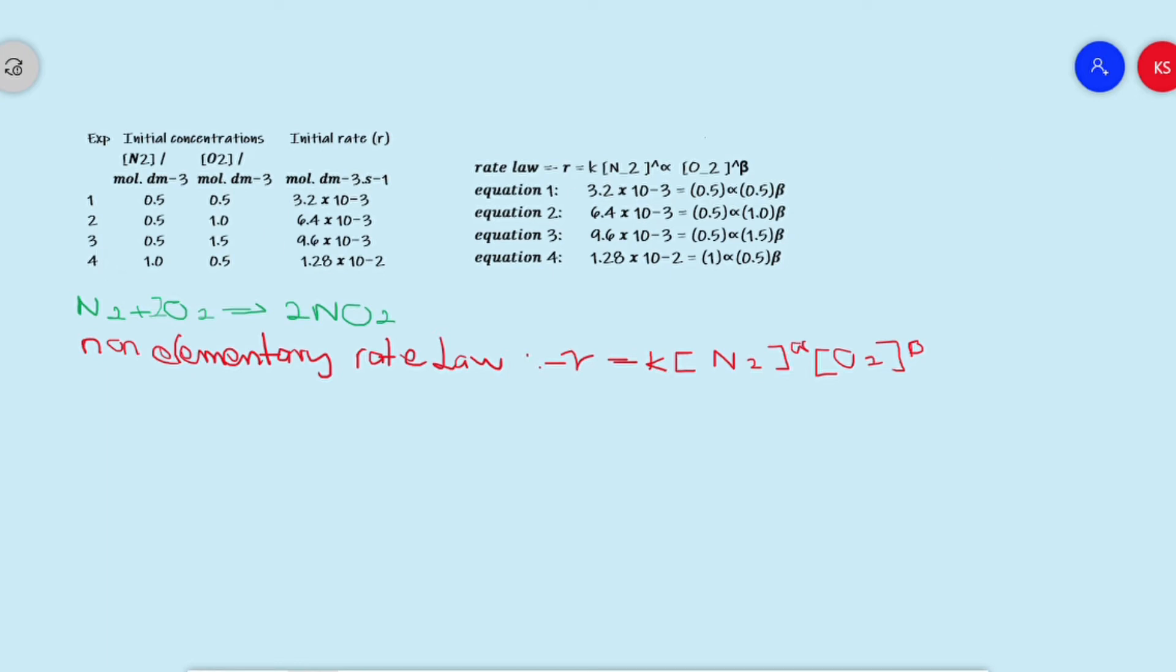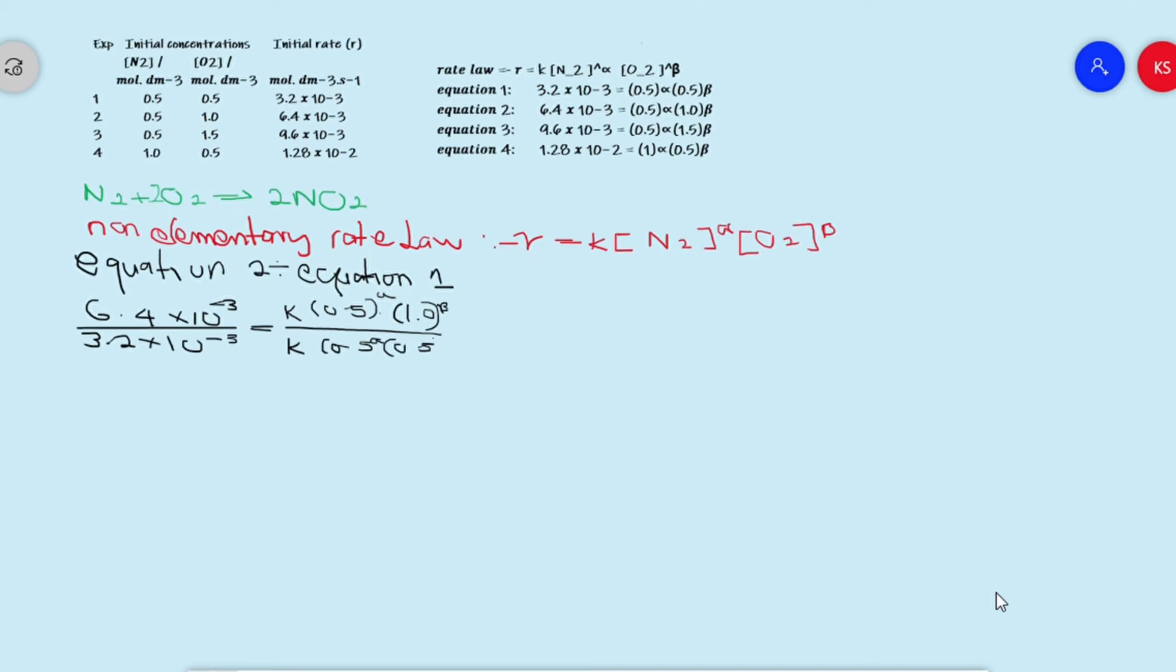Next step will be for me to calculate my unknowns, my alpha and beta. To do that, I am going to initially start by dividing my second equation with the first equation. The reason why we're doing that is so that this two here can cancel out, and I'll be able to calculate my unknown. Using mathematics, this and this will cancel out, so I'm just left with, resulting in my beta equals to one.